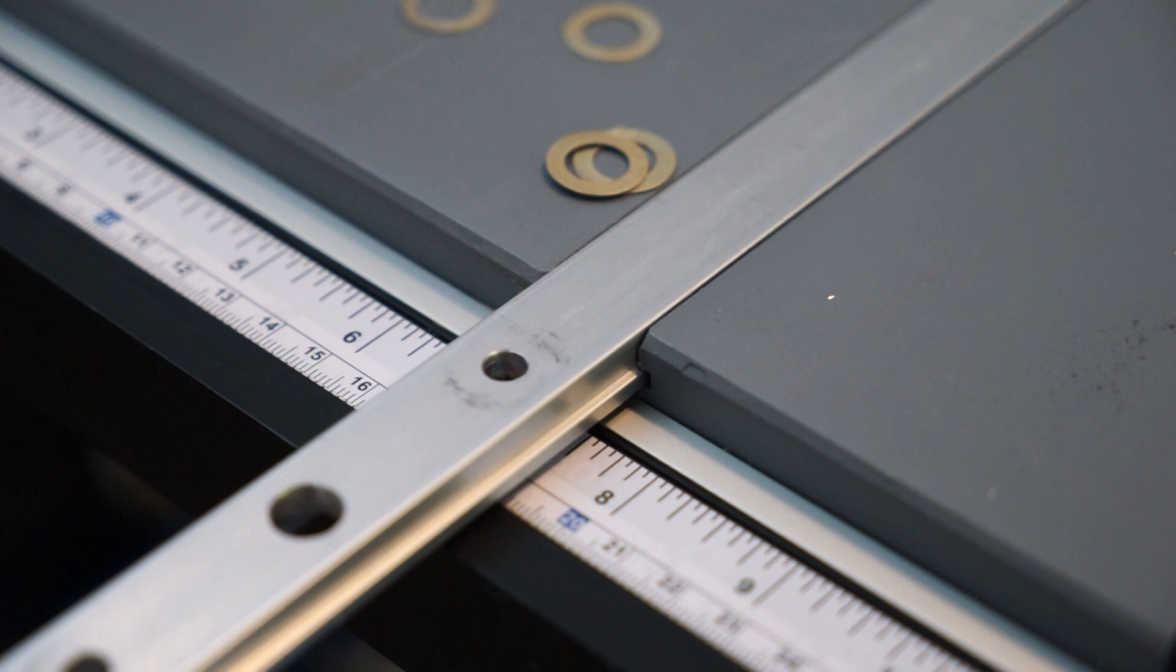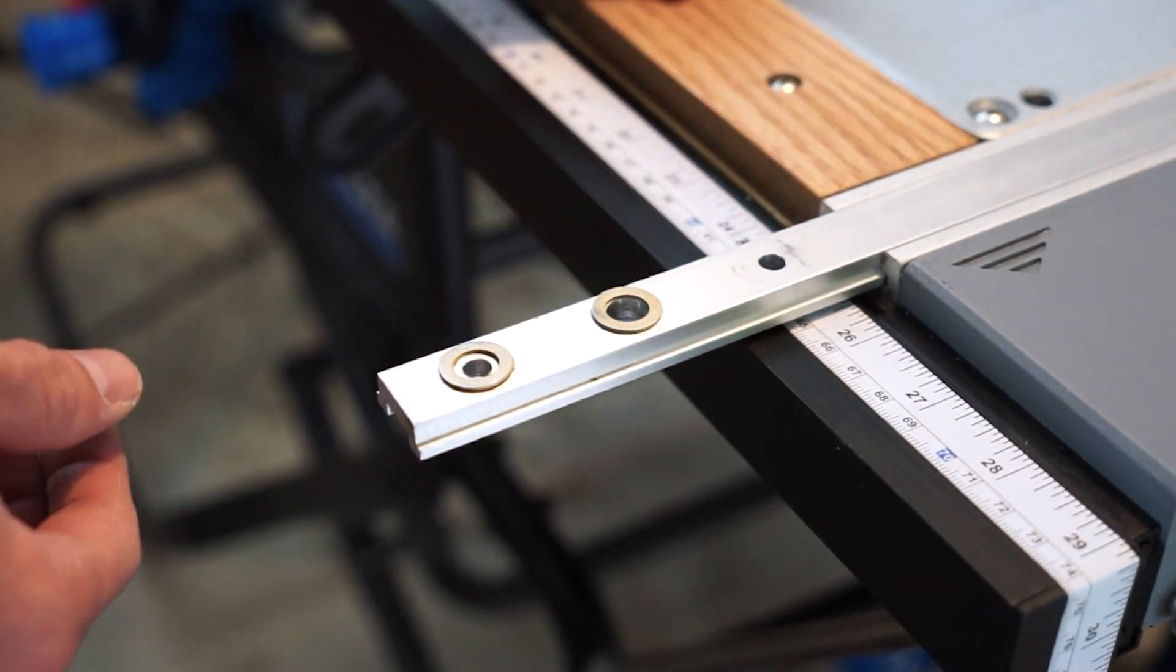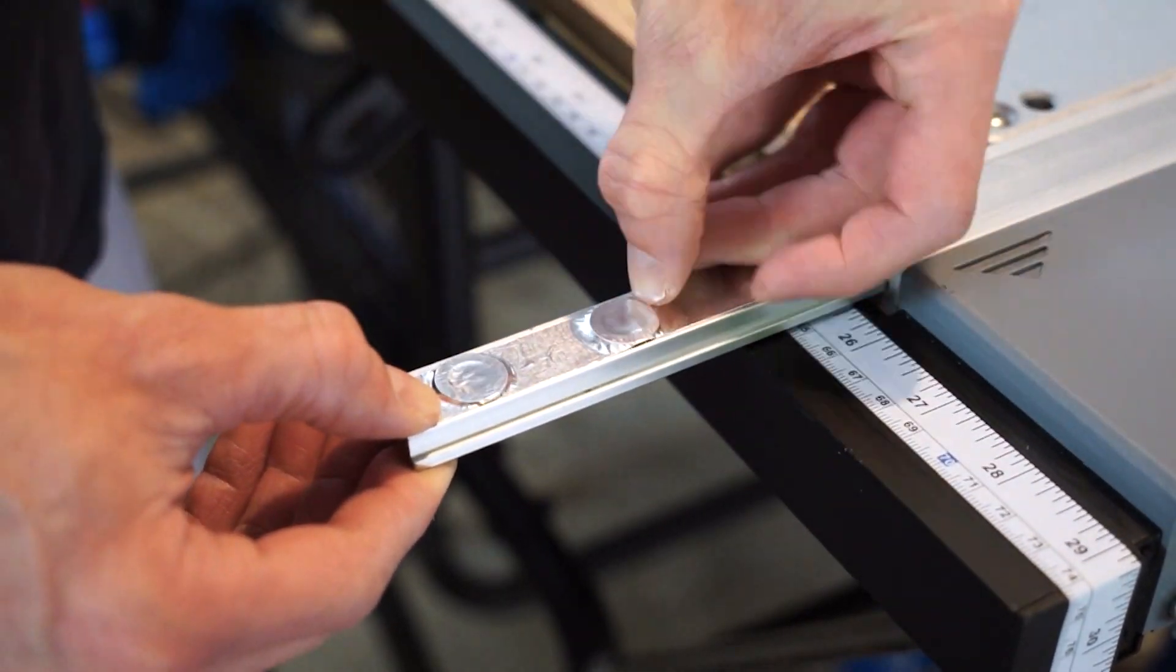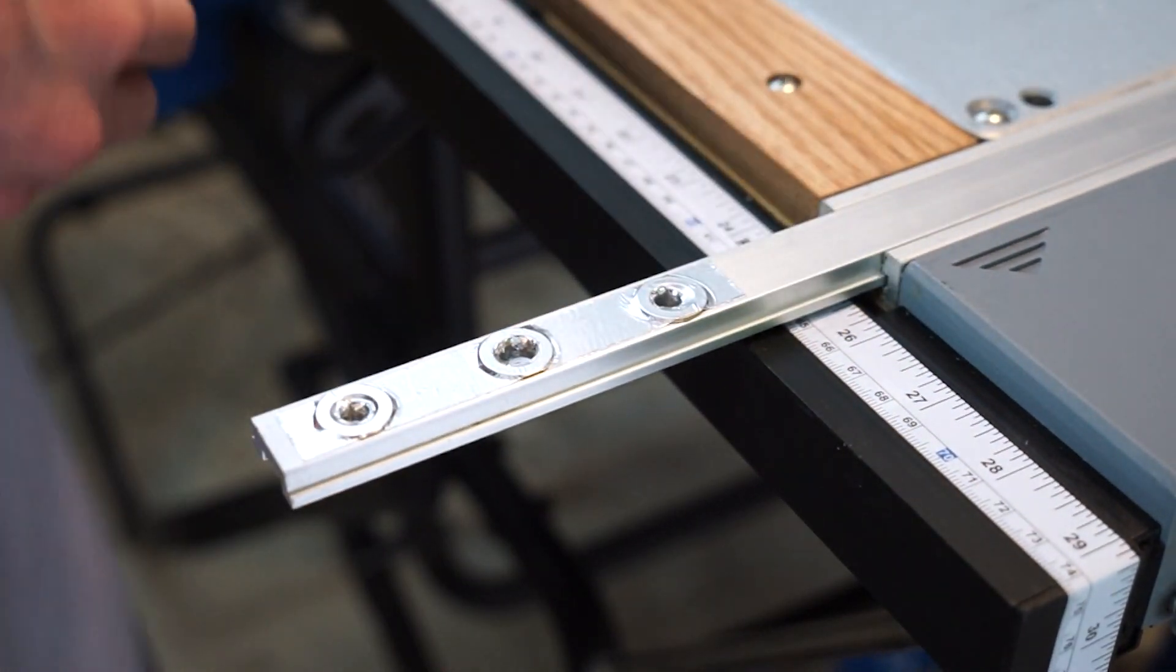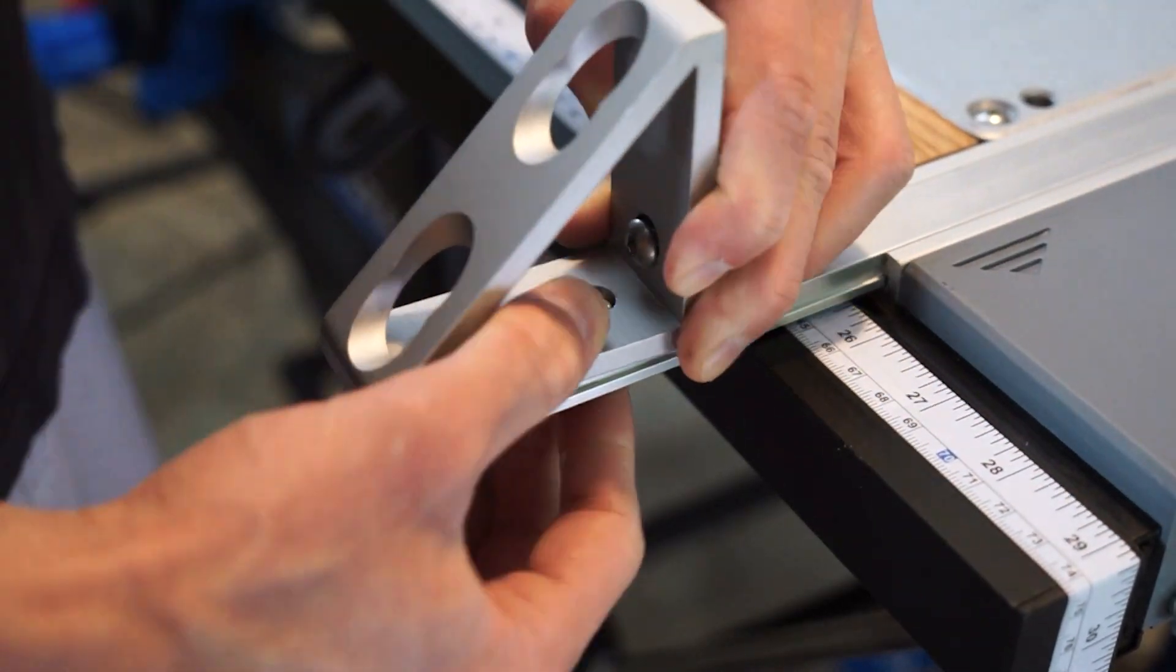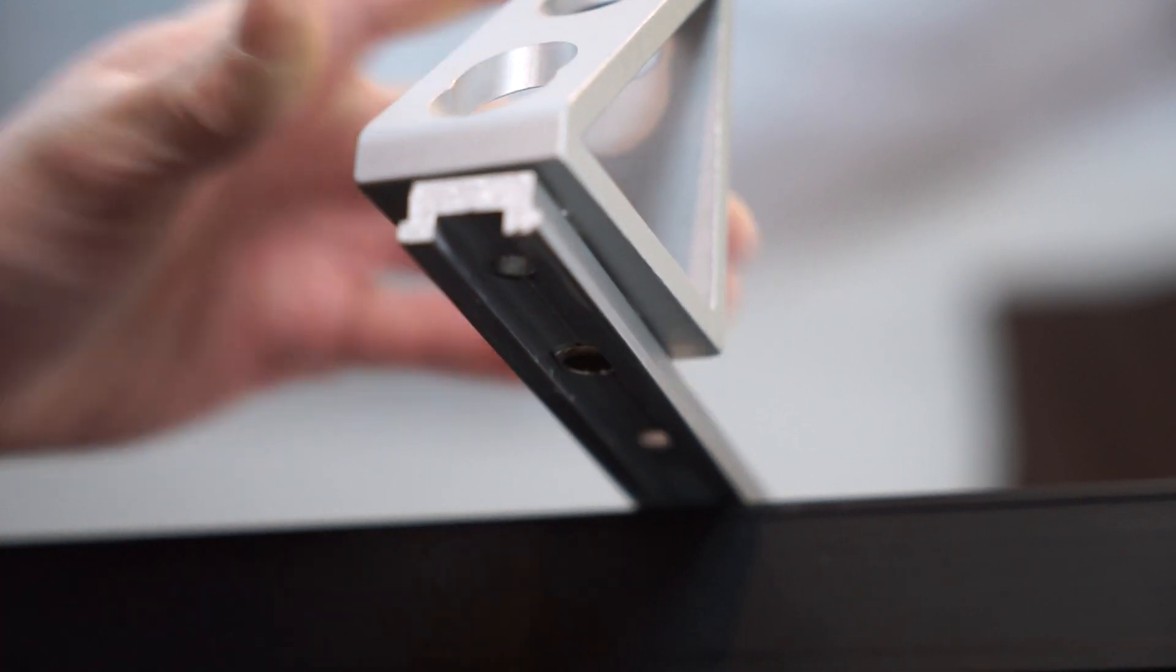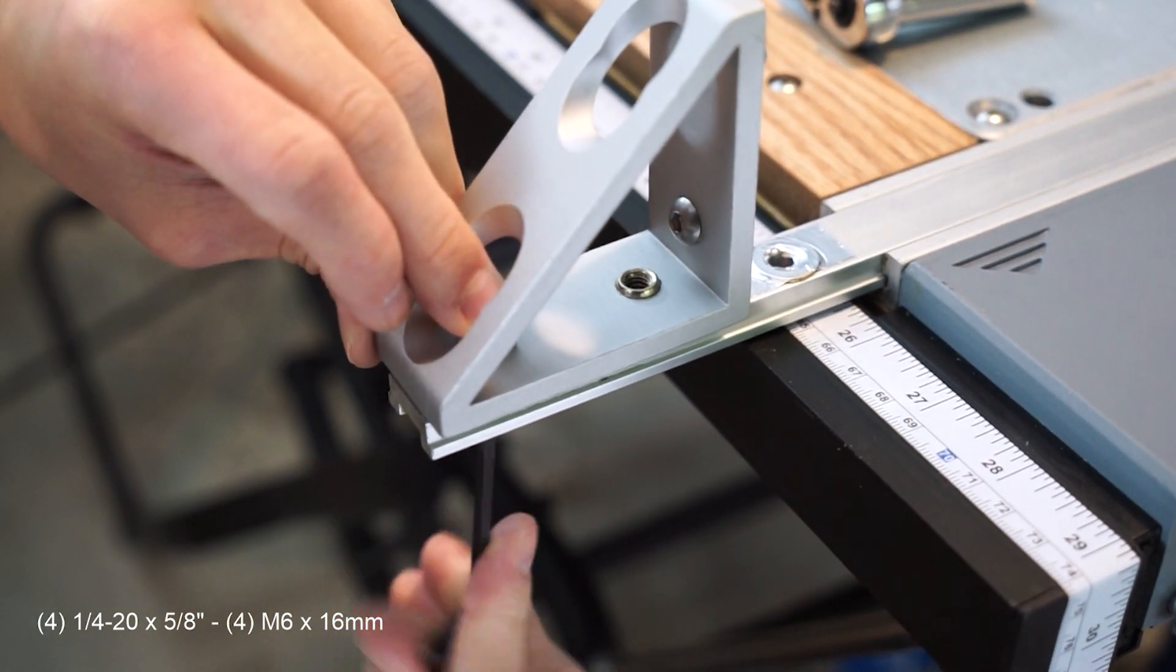There is some slop between the T-bar and T-tracks. I added a few thin washers to build up the surface of the T-bar so that the fence that rests on top of it would never make contact with the table. A few quarter-twenty bolts attached to both the gussets and the bottom of the fence.